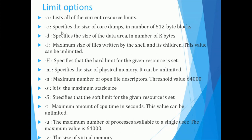ulimit options: -a lists all current resource limits. -c specifies the size of core dumps in number. -d specifies the size of the data area. -f is the maximum size of a file written by the shell and its children — this can be unlimited. -H specifies that the hard limit for the given resource is set. -m specifies the size of physical memory, which can be unlimited. -n is the maximum number of open file descriptors, with a threshold value of 64000. -s is maximum stack size. -S specifies that the soft limit for the given resource is set.